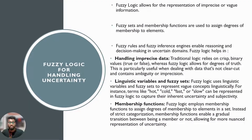Let's talk about fuzzy logic for handling uncertainty. Fuzzy logic allows for representation of imprecise or vague information. Fuzzy sets and membership functions are used to assign degrees of membership. Fuzzy rules and fuzzy inference engines enable reasoning and decision making in uncertain domains. Traditional logic relies on crisp binary values, whereas fuzzy logic allows for degrees of truth. This is particularly useful when dealing with data that is not clear-cut and contains ambiguity or imprecision.